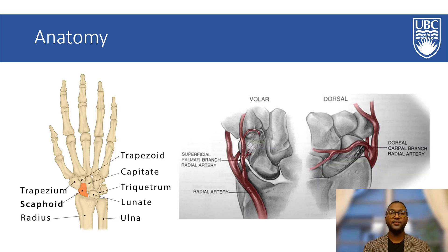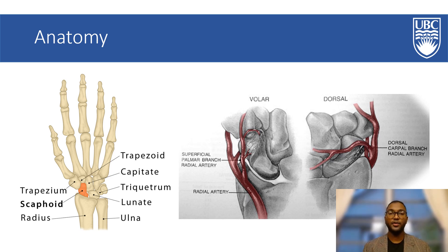The scaphoid is located on the radial side of the wrist and articulates with the radius, lunate, capitate, trapezoid and trapezium. It is our largest carpal bone resembling a cashew and is almost entirely covered by articular cartilage. The scaphoid has a proximal and distal pole. The central portion between these poles is known as the waist.